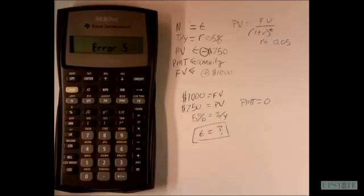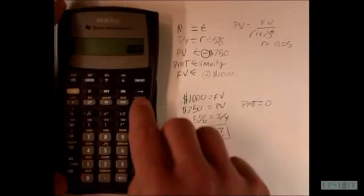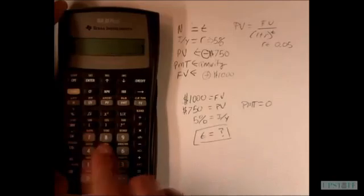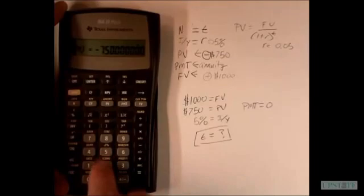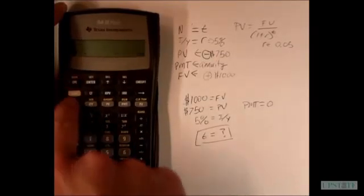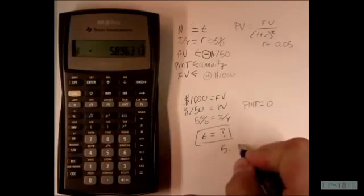So we'll just illustrate this again. We have 1,000 as our future value. Zero is our payment. Our present value is 750 and we enter it as a negative here. And then our interest rate is 5. So we then compute our number of time periods and that tells us that it will take 5.9 years.